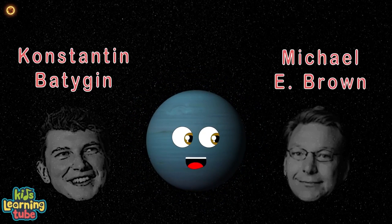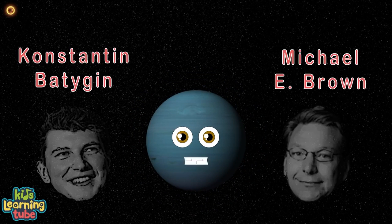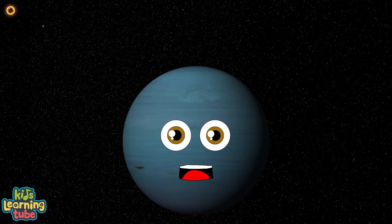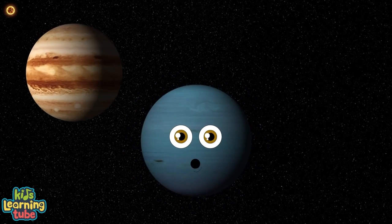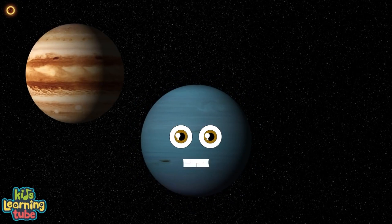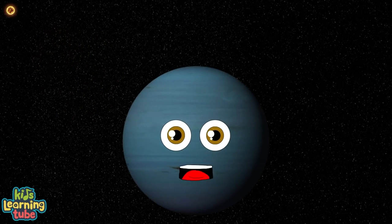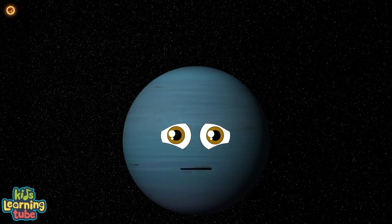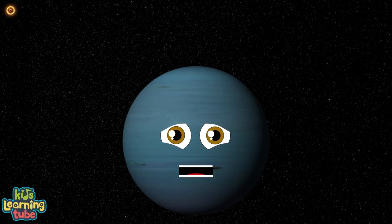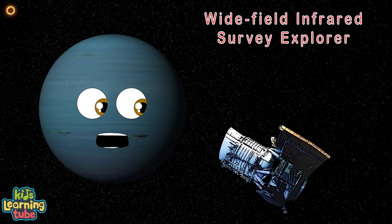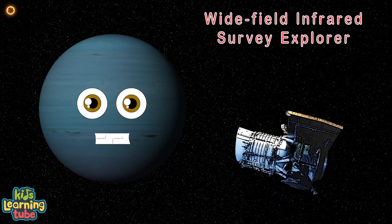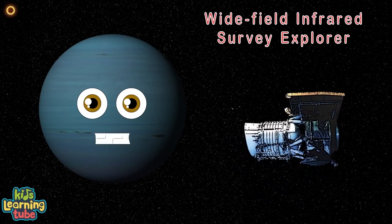Konstantin Batygin and Michael E. Brown think I could be the core of a giant planet that used to be around. They think my original orbit used to be by Jupiter during the genesis of the solar system, then ejected. As of May 2020, there's no observation of Planet Nine, but they have not ruled out my existence. The Wide-field Infrared Survey Explorer surveys space looking for me.